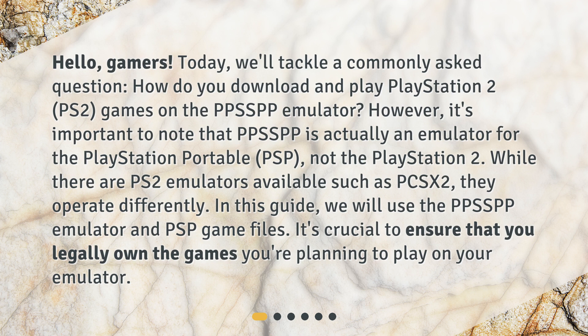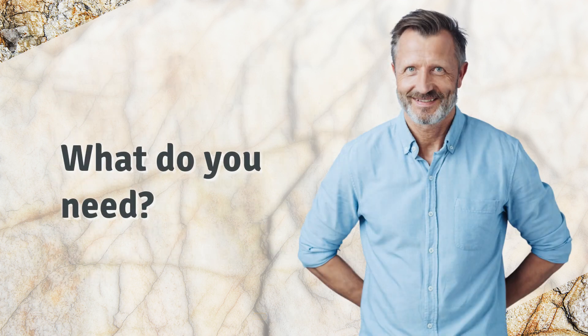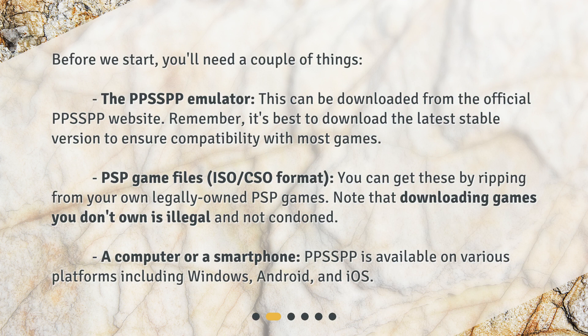It's crucial to ensure that you legally own the games you're planning to play on your emulator. Before we start, you'll need a couple of things: the PPSSPP emulator, which can be downloaded from the official PPSSPP website — download the latest stable version for best compatibility — PSP game files in ISO or CSO format, which you can get by ripping from your own legally owned PSP games. Note that downloading games you don't own is illegal and not condoned. You'll also need a computer or smartphone, as PPSSPP is available on Windows, Android, and iOS.